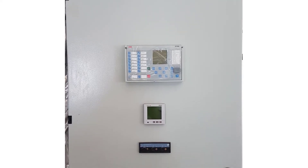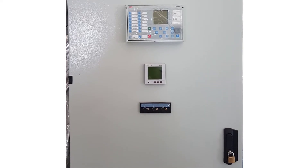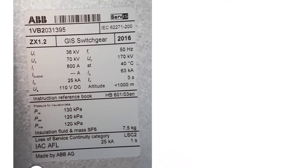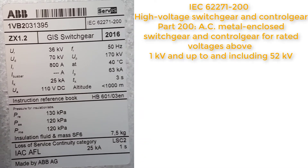ZX 1.2 ABB make metal enclosed GIS switchgear. This ZX 1.2 complies with IEC 62271-200, which covers high voltage switchgear and control gear, Part 200: AC metal enclosed switchgear and control gear for rated voltage above 1 kV and up to and including 52 kV.